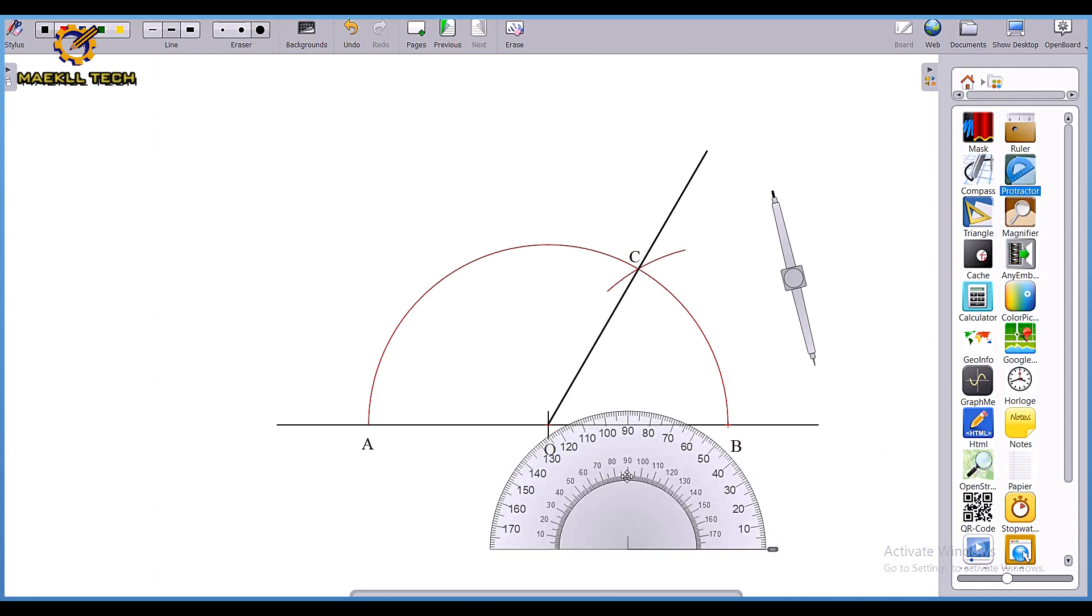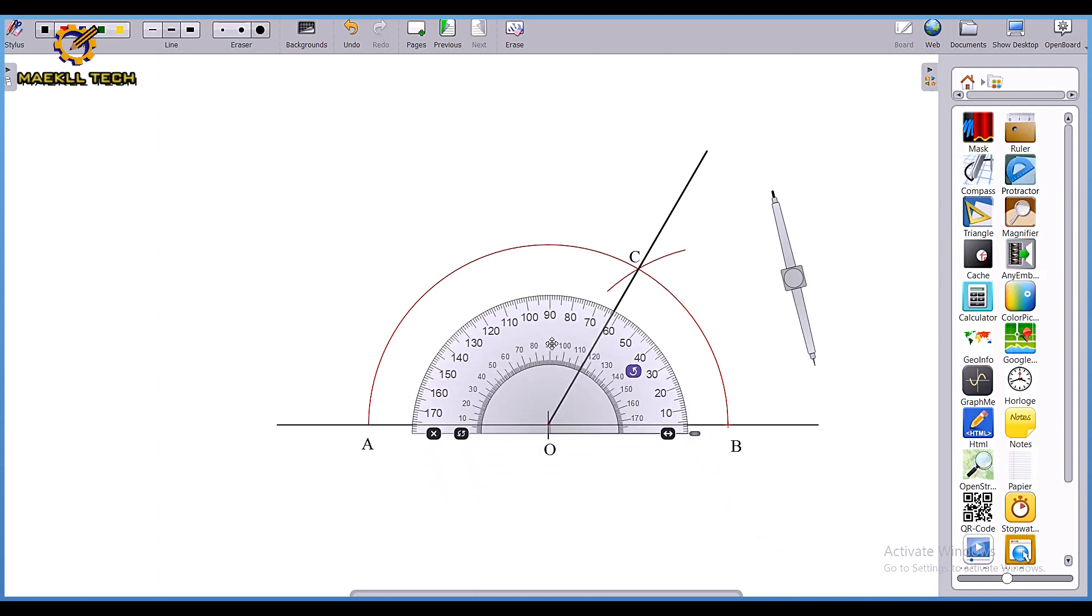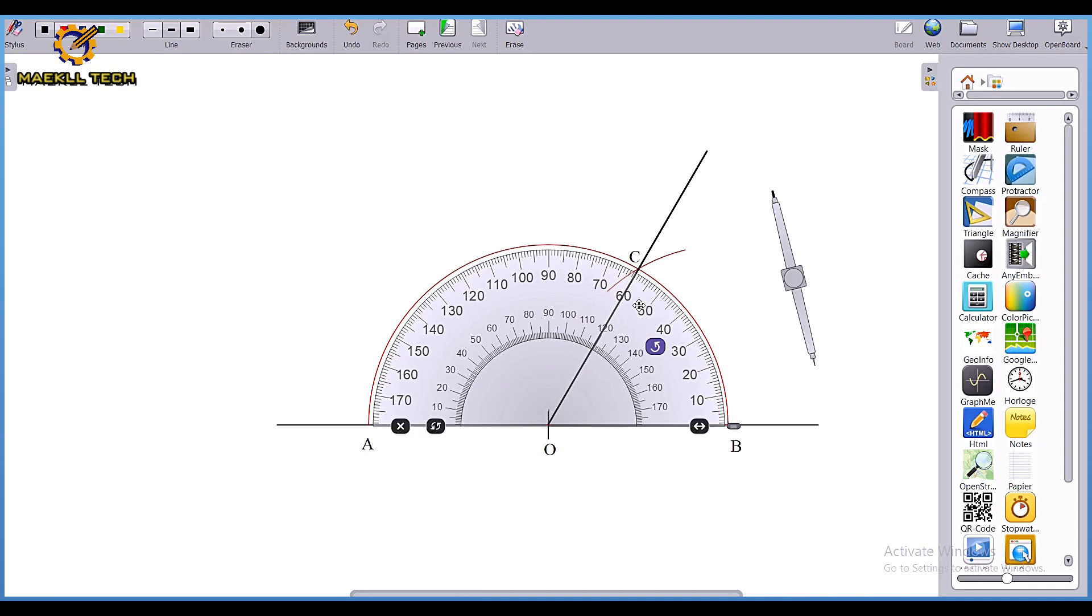Here is my protractor right here. If I expand this a little and place it, you can see the area that is 60 degrees exactly. That is 60 degrees.